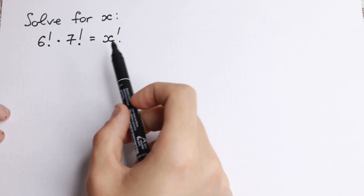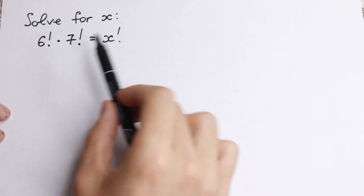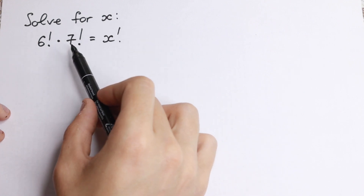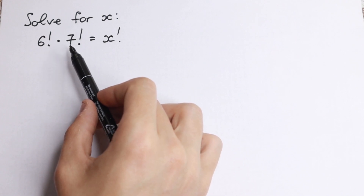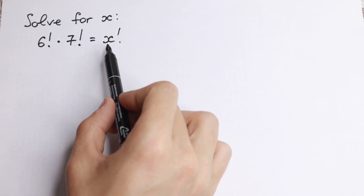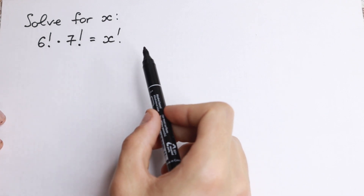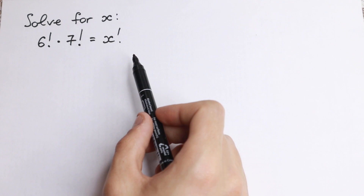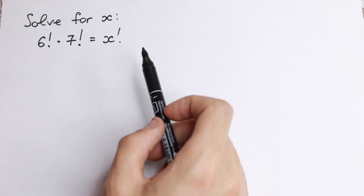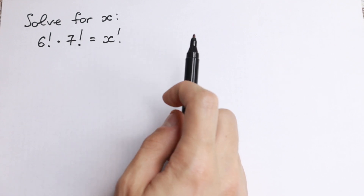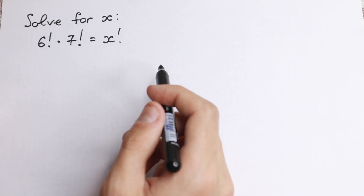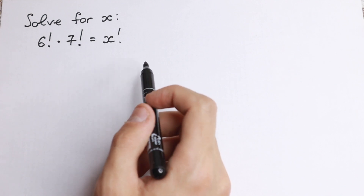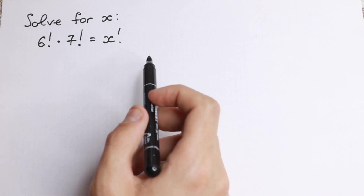How can you solve it? At first glance it looks like 6 factorial times 7 factorial equals 42 factorial, so the answer would be 42. But this is not our case — this is absolutely incorrect. I want to start with a little explanation, and you need to understand this rule first.